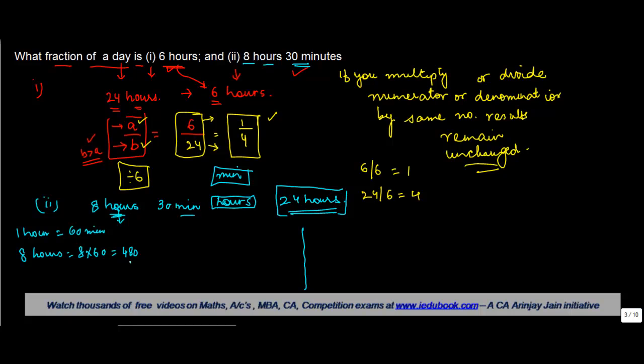So 510 minutes vis-a-vis 24 hours. Now 24 hours can be written as 24 into 60 - 120 plus 24, 144 - so 1440 minutes. So you have to compute 510 minutes out of 1440.